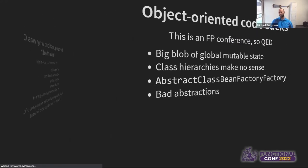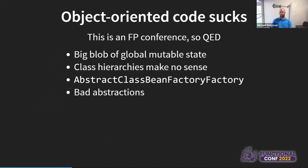Let's talk about how much object-oriented code sucks. We're at an FP conference — therefore, we all agree OOP is dead, OOP is evil, it's the worst thing that ever existed. I did five minutes of research and looked online at what people are complaining about with OOP these days. One phrase that came up: it's a 'big blob of global mutable state.' Class hierarchies make no sense. Anyone who went through learning Java or C++ remembers the animal class with subclasses cat and dog that say meow and woof — but none of that actually makes sense in real life code. We also know that Java does ridiculous things like abstract factory factory. OOP encourages really bad abstractions, and all these are things that FP does way better than OOP.